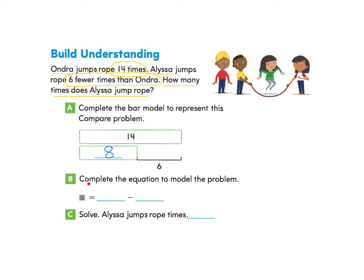Now we'll take a look at Part B — complete the equation to model the problem. We don't know how many jumps Alyssa makes, but we do know the total amount of jumps Andrea makes, which is 14. And Alyssa jumps 6 fewer times than Andrea, so we're going to take away 6. When we take 14 take away 6, we get 8. We can answer: Alyssa jumps rope 8 times.